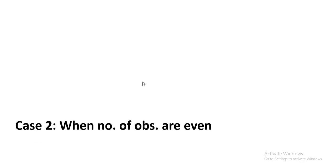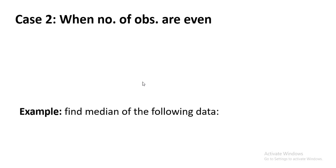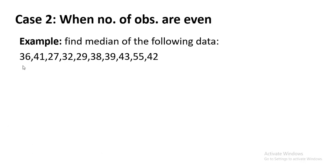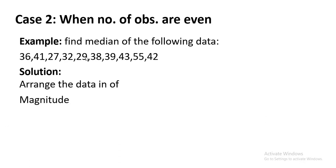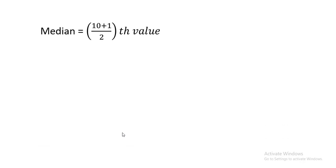Moving on to Case 2 — when the number of observations is even. For this dataset, we first arrange the data in ascending order. The least value is 27 and the highest is 55: 27, 29, 32, 36, 38, 39, 41, 42, 43, 55. Counting gives us n = 10 observations.